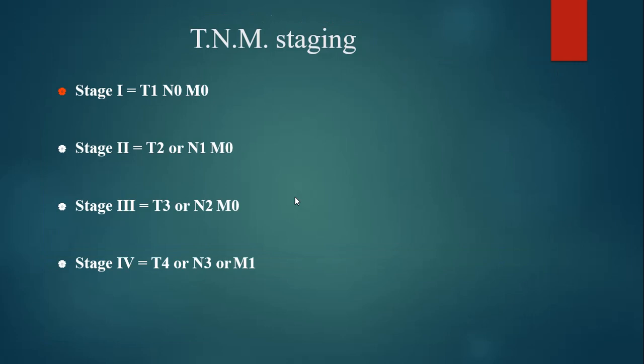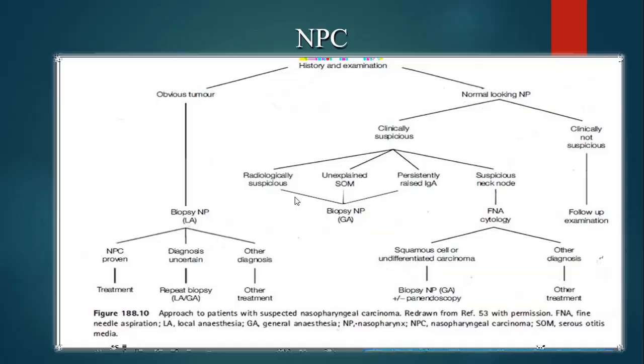For overall staging of nasopharyngeal carcinoma: Stage 1 is T1, N0, M0. Stage 2 is T2, N1, M0. Stage 3 is T3 or N2, M0. Stage 4 includes T4 or N3 or M1.